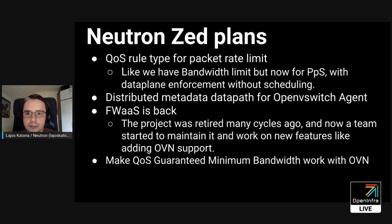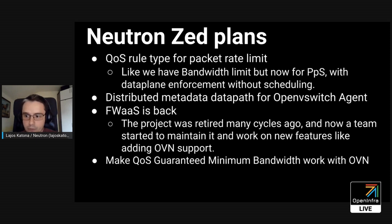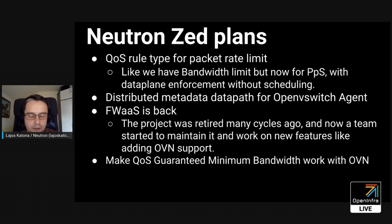There are a few things we couldn't finish during the previous cycle. One is again a QoS feature. The previous one was the minimum guaranteed packet per second, but there is another — the packet rate limit. You can think of it as an analog for the bandwidth limit QoS rule type, but for packet per second. The previous feature was a scheduling feature, but the packet rate limit is a data plane enforcement feature. There will be no scheduling guarantee, but on the data plane the packets will be limited.